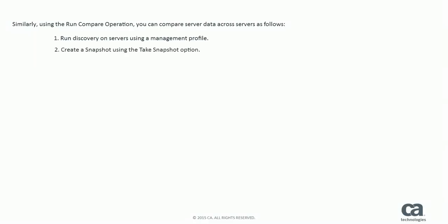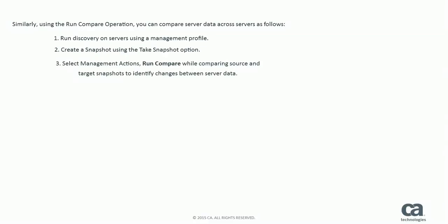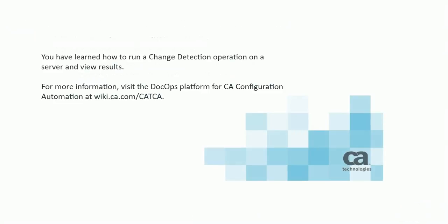Similarly, using the Run Compare operation, you can compare server data across servers as follows. Step 1: Run Discovery on servers using a management profile. Step 2: Create a snapshot using the Take Snapshot option. Step 3: Select Management Actions and Run Compare while comparing source and target snapshots to identify changes between server data. You have learned how to run a change detection operation on a server and view results.